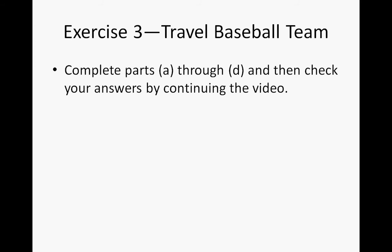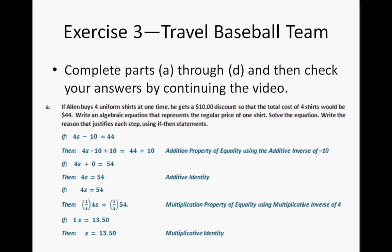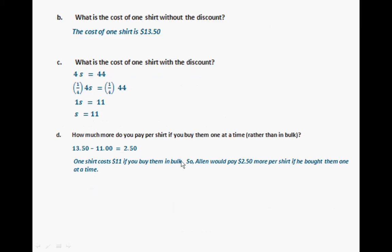All right, you should have completed through part D. Your equation, and this should be pretty much what everybody should have gotten, is 4 times S minus 10 equals 44. Using your if-then statements, you would conclude that S is going to be equal to $13.50. For part D, the cost of one shirt is $13.50.